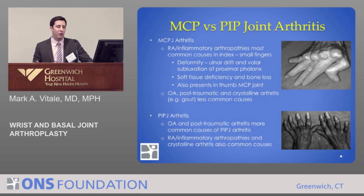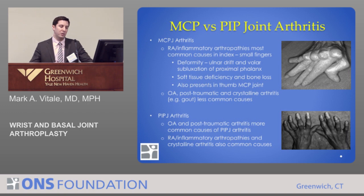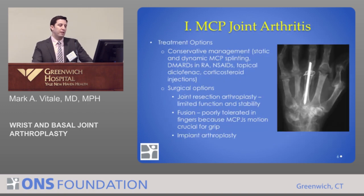In contrast, osteoarthritis, post-traumatic arthritis, and crystalline arthropathies like gout are far less common at the MCP joint. PIP arthritis is a different animal — it is commonly caused by osteoarthritis and post-traumatic arthritis much more frequently than in the MCP joint. Rheumatoid and inflammatory arthritis can also be causes at this joint.